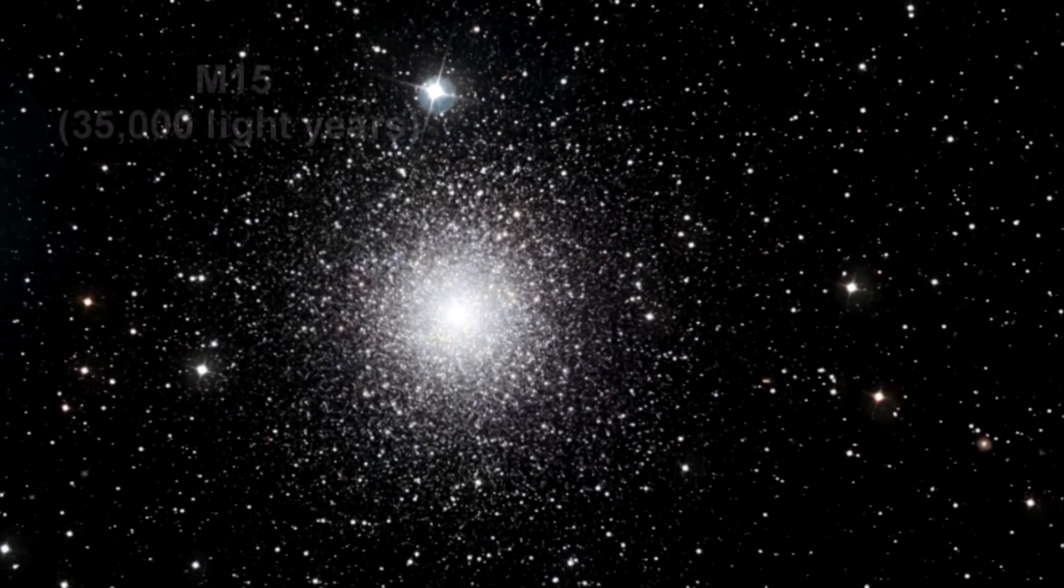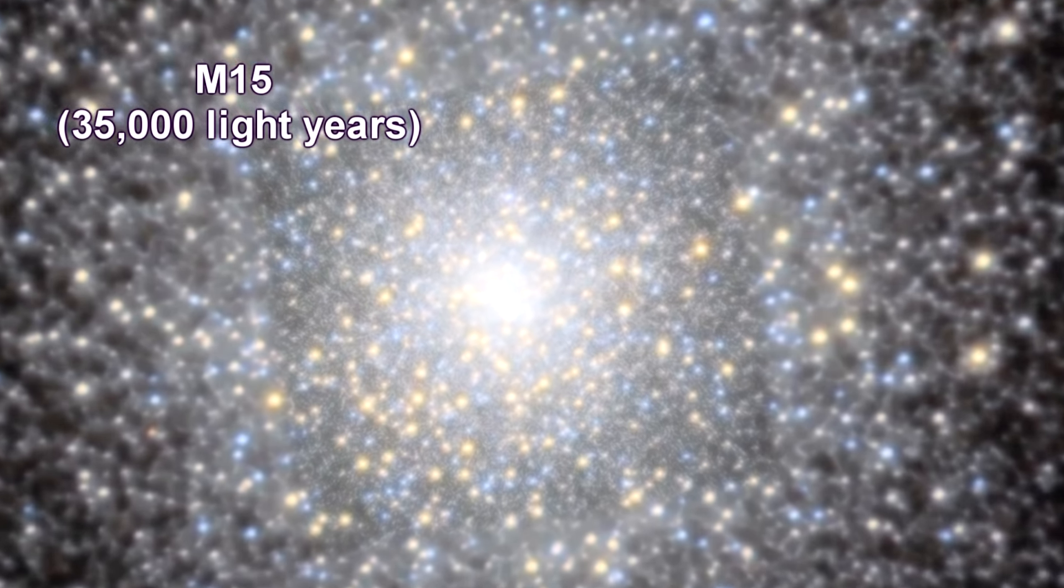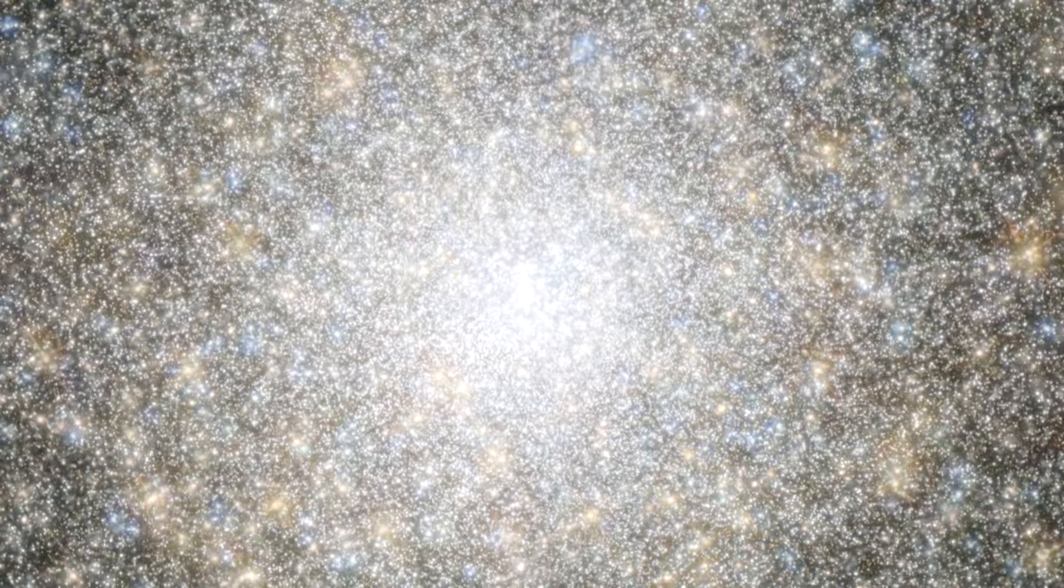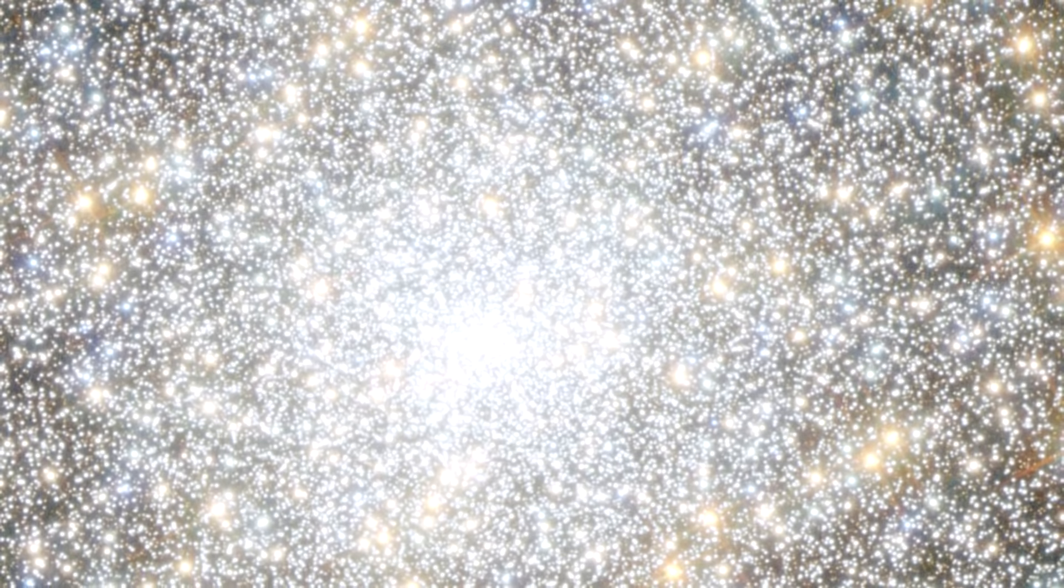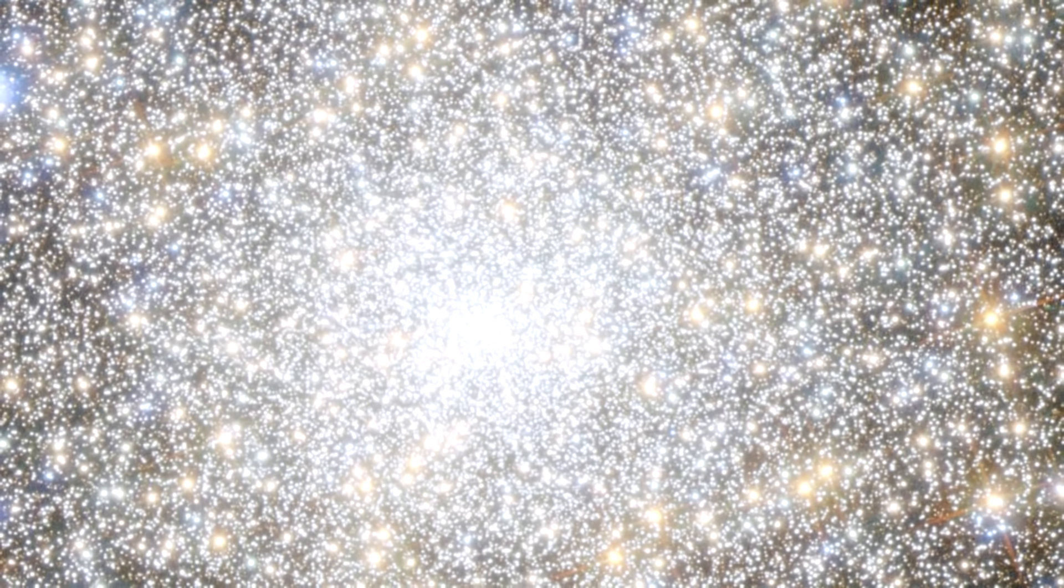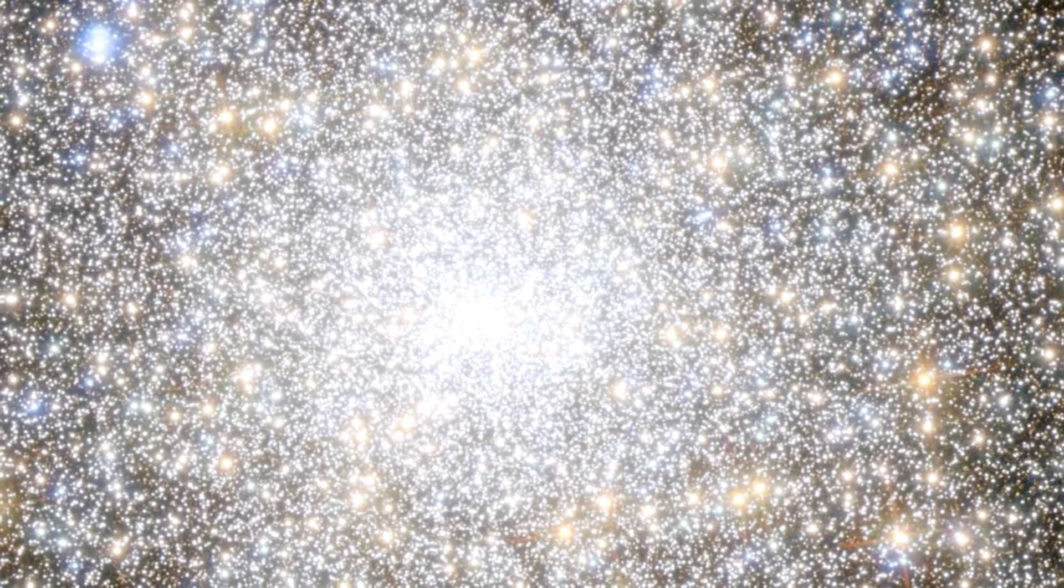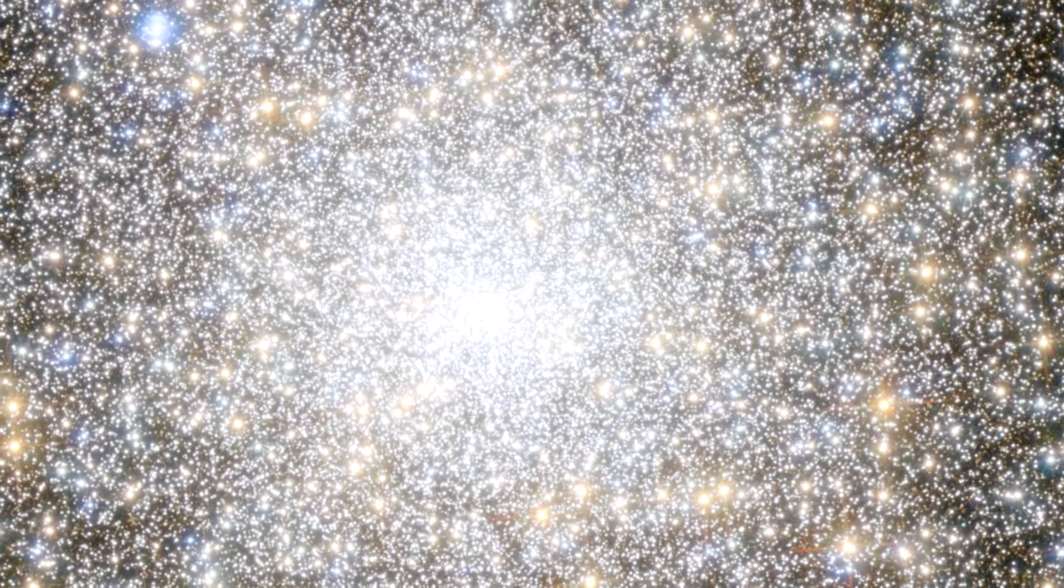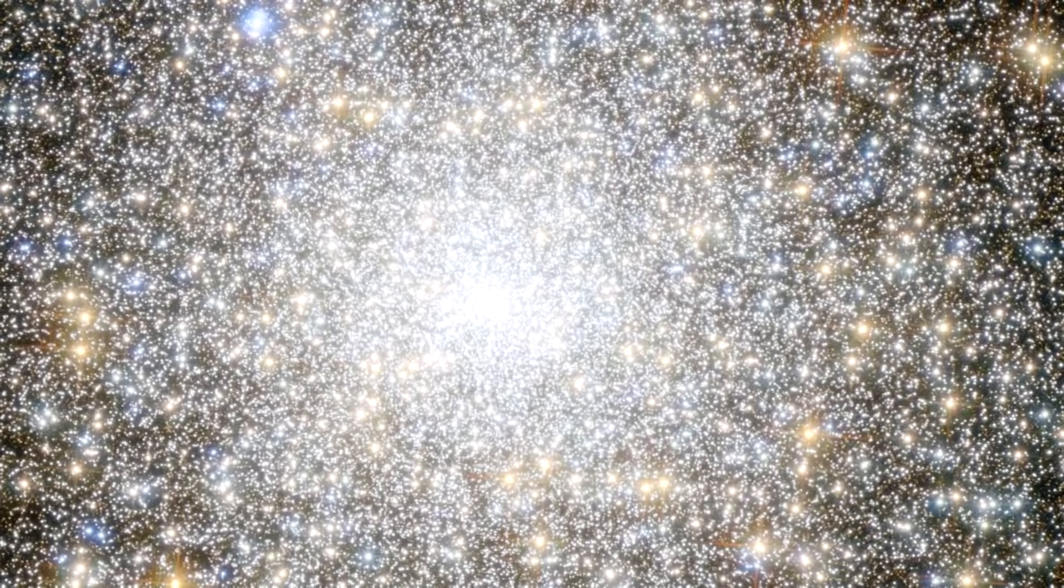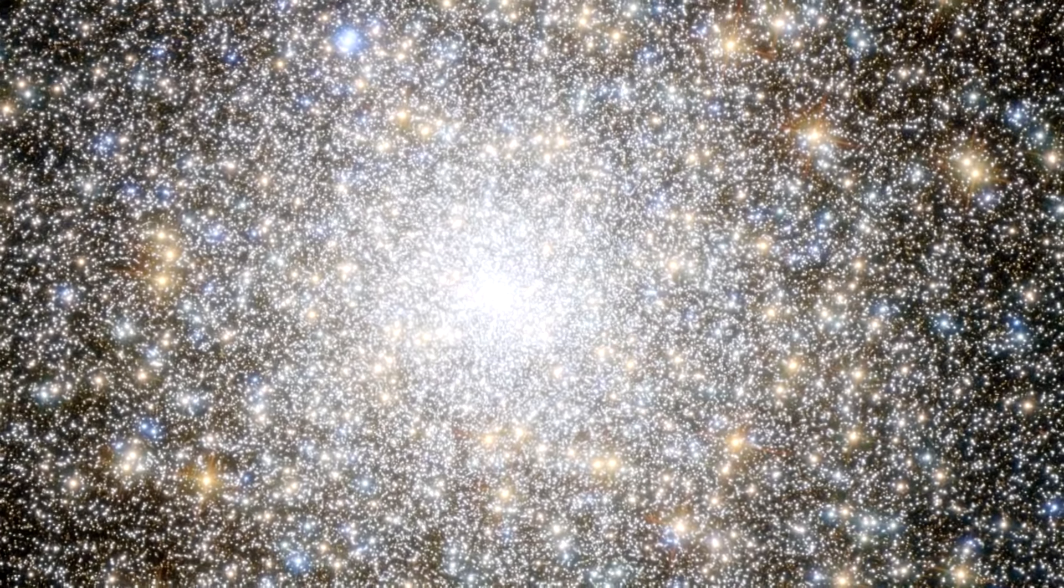The globular cluster M15 is one of the oldest. Hot blue stars and cooler golden stars can be seen swarming together in the image. As well as stars, M15 was the first cluster known to host a planetary nebula, and it has been found to have a rare type of intermediate black hole at its center. Intermediate mass black holes are thought to form from either the merging of smaller, stellar mass black holes, or as a result of a collision between massive stars in dense clusters. A third possibility is that they were formed during the Big Bang. In terms of mass, they lie between the more commonly found stellar mass and supermassive types of black holes that we discussed in our segment on the Milky Way.